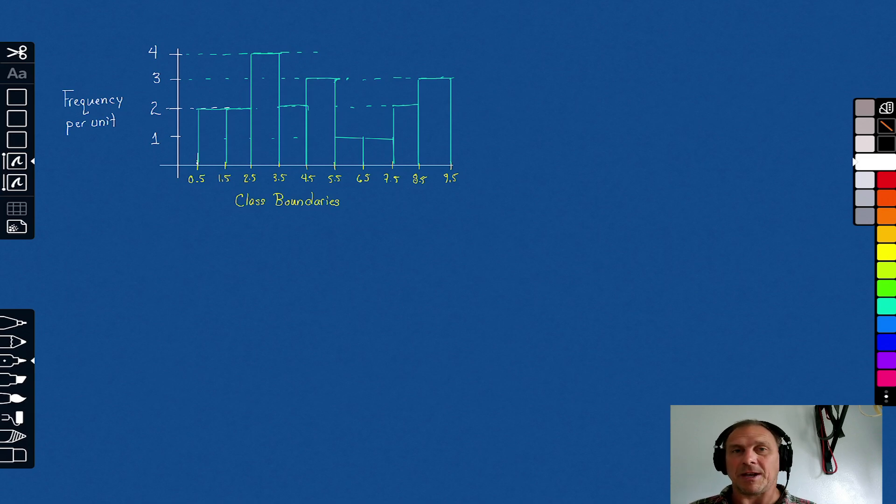This is the histogram that we made in our last video, and this was from the data set for the first 20 digits of pi. And notice that each one of these bars is called a class. In this case, this class was just a single data value. For example, the first class was the data value of ones, and the second class was the data class of twos.